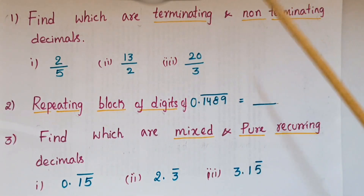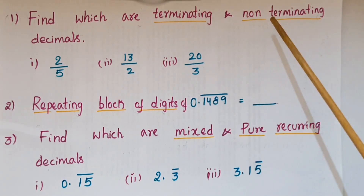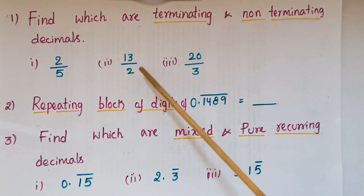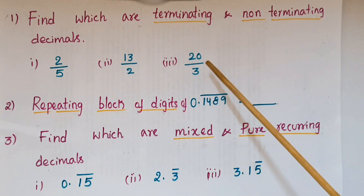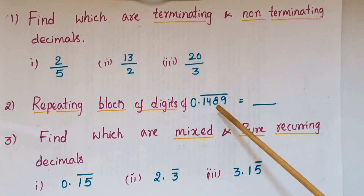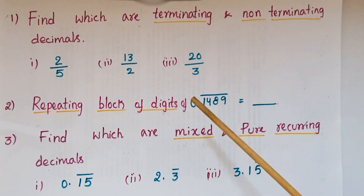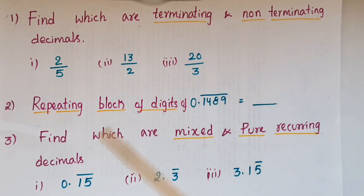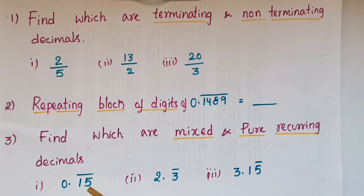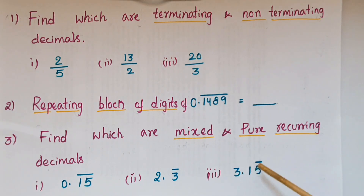Now please answer these questions. First, find which are terminating and which are non-terminating decimals: (1) 2 by 5, (2) 13 by 2, (3) 20 by 3. Second question: find the repeating block of digits of 0.1489 bar. Third question: find which are mixed recurring and which are pure recurring decimals: (1) 0.15 bar, (2) 2.3 bar, (3) 3.15 bar.